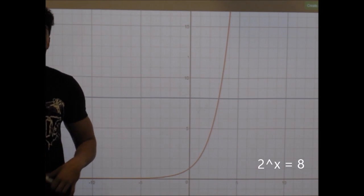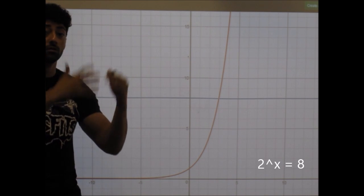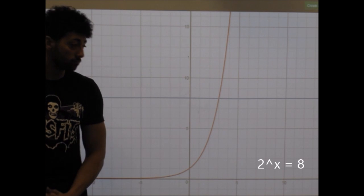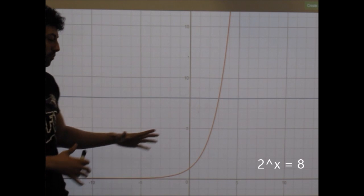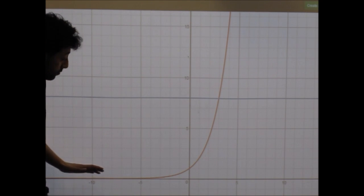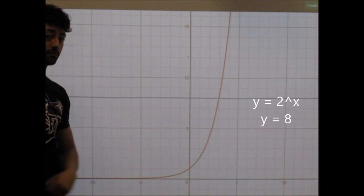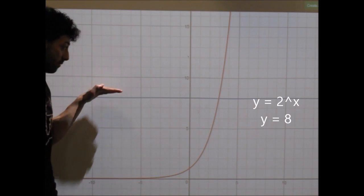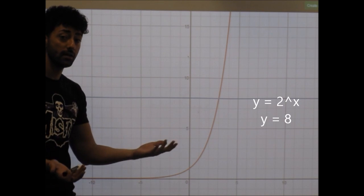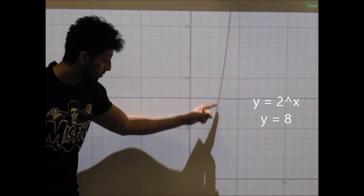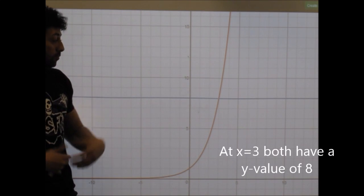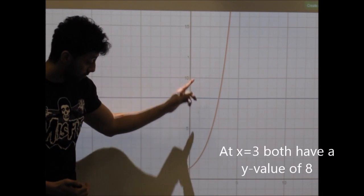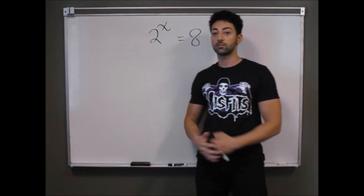That equation, 2 raised to the power of x equals 8 — what it's really saying is: 2 raised to what power gives me 8? That 8 is actually a y-value, so it's asking at what x-value we have a y-value of 8. Here I've plotted 2 to the x, which generates an exponential curve shown in red. The horizontal line y equals 8 is in blue, and their intersection point occurs at x equals 3, so graphically the solution is 3.